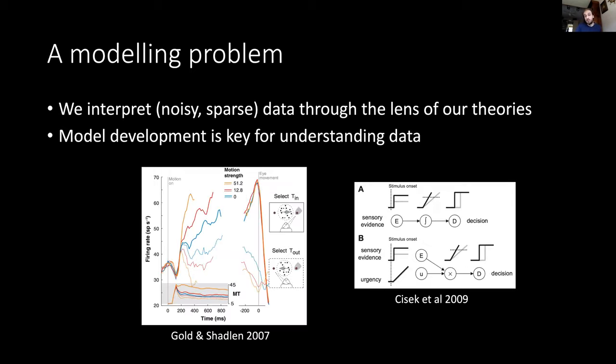The second example are these recordings done by Josh Gold and Mike Shadlen and many others, who showed in the late 90s that neurons in the monkey area LIP appeared to implement some sort of integrate-to-threshold-like firing behavior when these monkeys were making perceptual decisions.